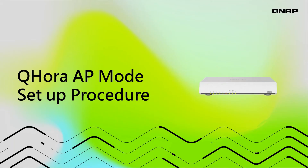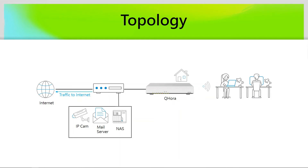Moving on to our topology, we have a router without Wi-Fi that is provided by the ISP. This is common in fiber connections, where you get a simple optical network unit, or ONU. This unit will provide you with 1GB or 10GB speeds, but it has no Wi-Fi feature. In order to have Wi-Fi connection at home, I add a QHORA and set it in AP mode. All my wireless clients at home connect to my QHORA to get good Wi-Fi performance.